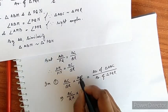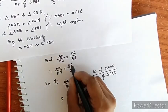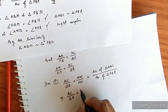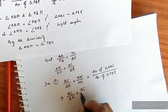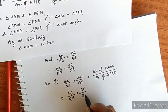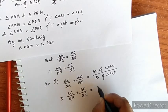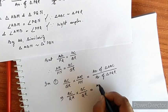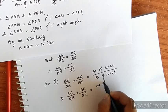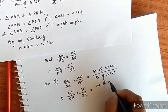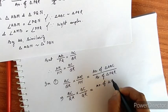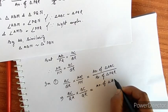equals BC by QR into AM by PN, and BC by QR equals BC by QR.